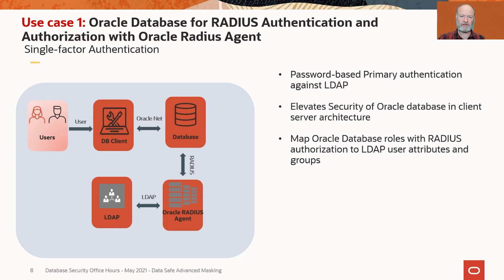In order to authenticate, the database has to compare the hash the client sent with a stored hash, either in its own data store — the user table — or in whatever directory it's consulting. If that directory is Active Directory, the directory would have to present to the database a hash in a format the database can understand. To do that, you would install the Oracle password filter for Microsoft Active Directory on the domain controller, and extend the Active Directory schema to create a place to hold that password hash.